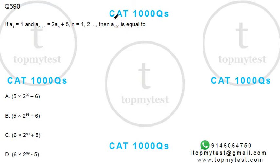Hi! This is a question on progressions. Let's see what this says. a₁ is 1 and aₙ₊₁ is twice aₙ plus 5. So each term is twice the previous term plus 5. Then the hundredth term equals how much?